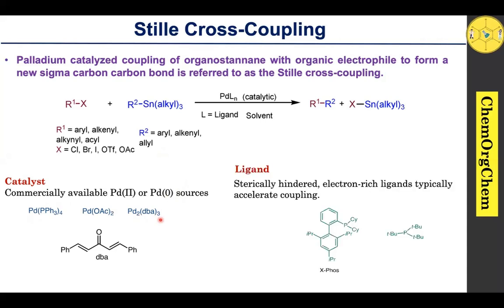When it comes to the ligand, sterically hindered or electron-rich ligands are typically useful for this kind of reaction. Here you see this one is a sterically hindered ligand known as X-Phos, and similarly this one is also an electron-rich as well as sterically hindered ligand.